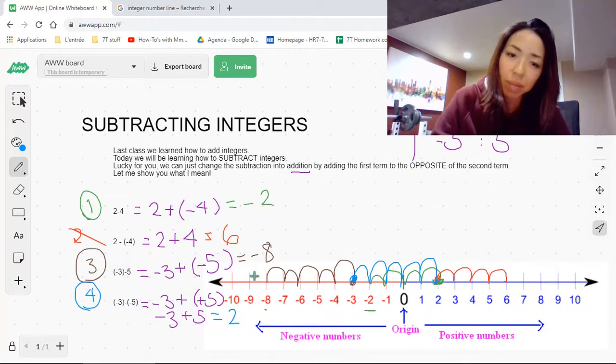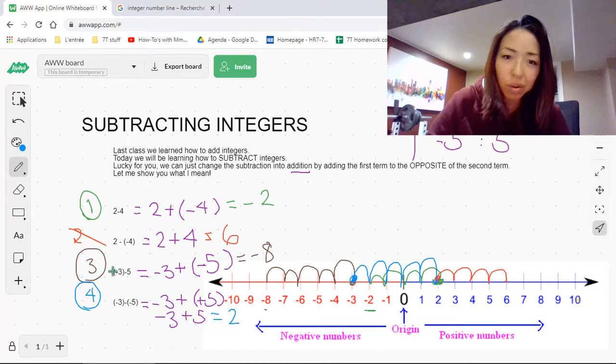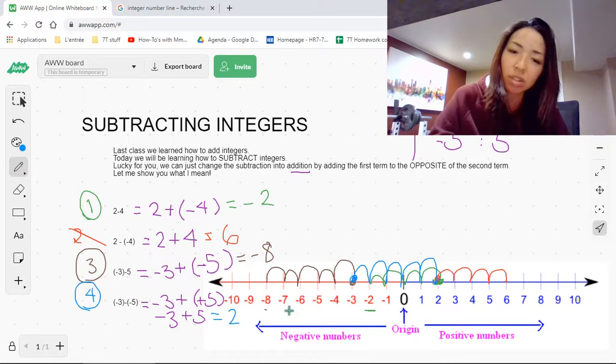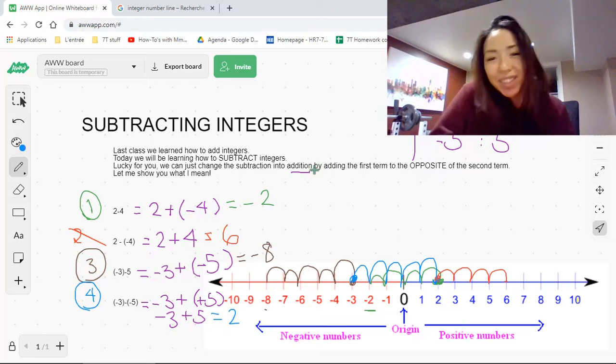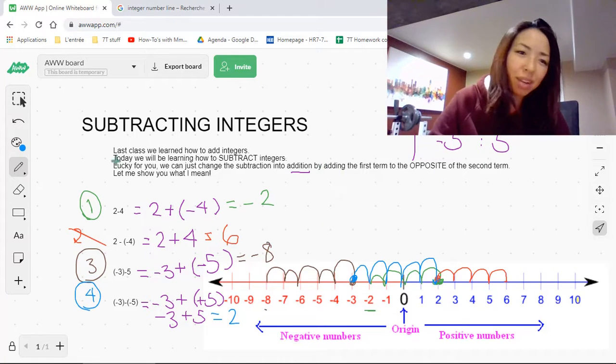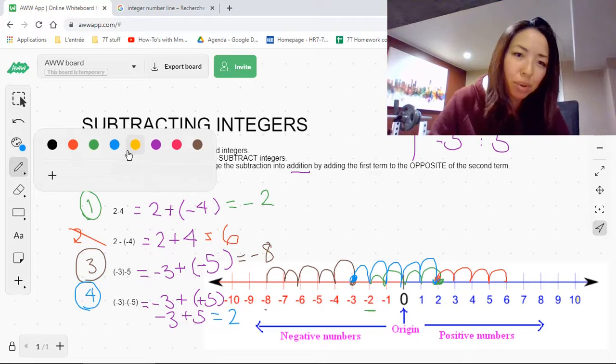Hope that makes sense to you. You can watch this again if you wish. You can go through the practice problems. This is one way to do subtracting integers. I will show you other ways further on. But as you see on the number line, that's the best way to visualize how the numbers are working. So feel free to say bye now. Otherwise, you can stick around and see me draw a cheeseburger.